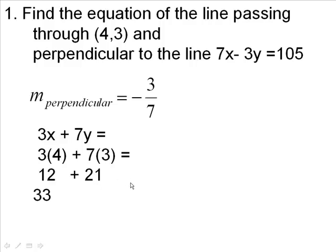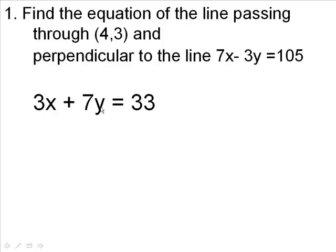So the slope is negative 3 sevenths. That makes this line perpendicular with this line. And the number that corresponds with the point 4, 3 is going to be 33. So you're going to have 3x plus 7y equals 33. This is the equation of the line passing through 4, 3 and perpendicular to this line up here. This is the answer.